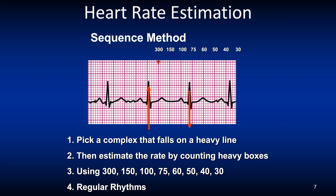Let's try this. Choose one of the QRS complexes which are falling on top of a solid pink line. If the next QRS fell on this line, the rate would be 300, then 150, 100, 75. So this rate is approximately 75.